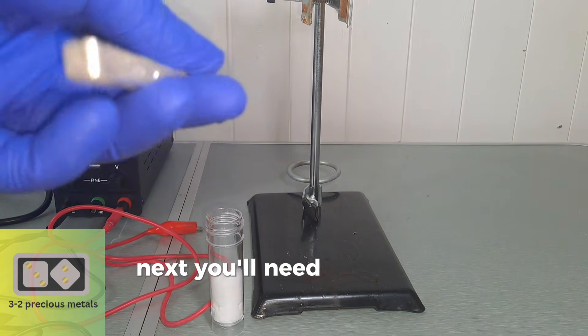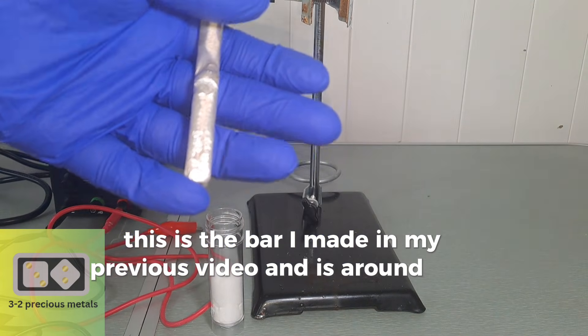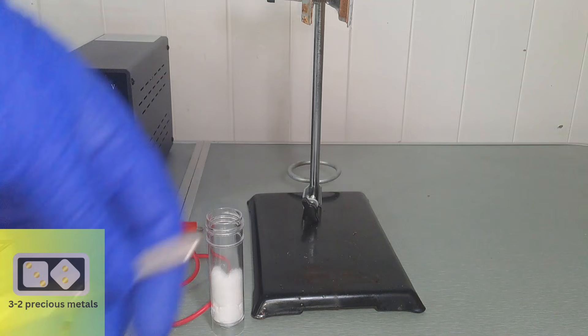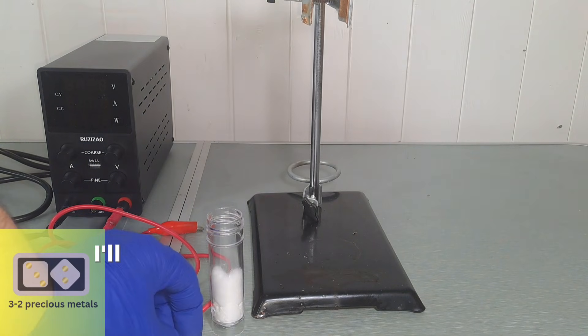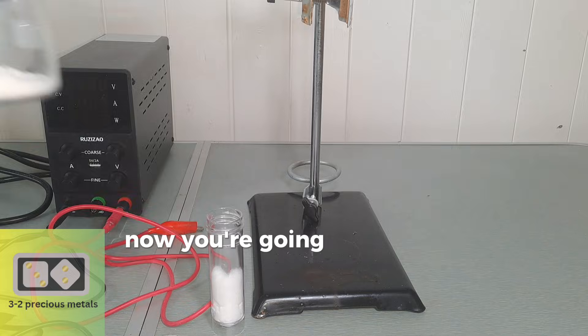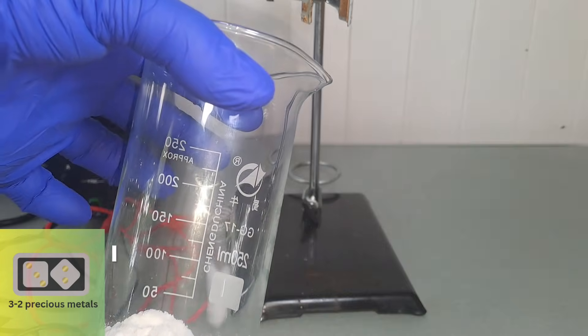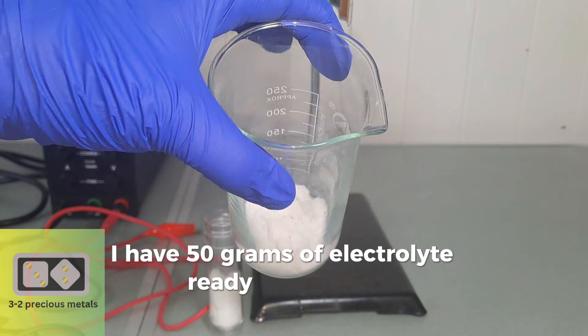Next, you'll need an anode. This is the bar I made in my previous video and is around 99% pure. If you haven't seen that video, I'll leave a link in the description for it. Now you're going to need a beaker or a jar to hold your electrolyte. I have 50 grams of electrolyte ready to dissolve.